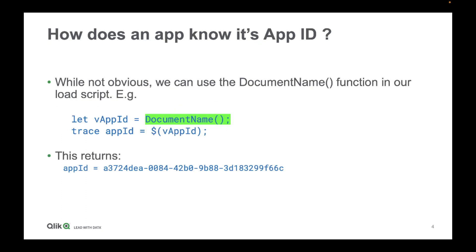So how does an app know its app ID? Well, it isn't obvious at first. There's a built-in function, DocumentName(), and in SaaS that will return the app ID, which will be a GUID, as you can see here.